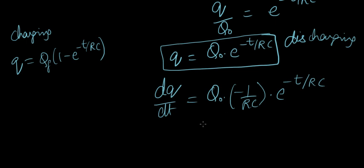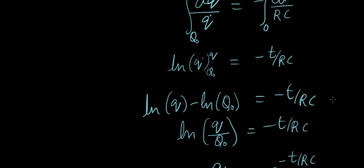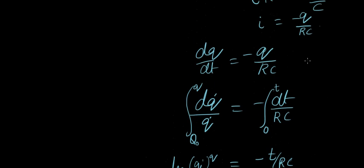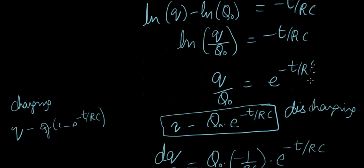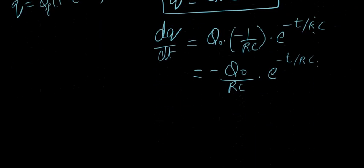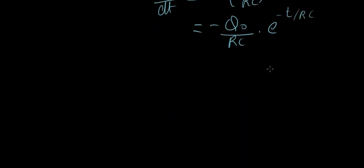So here, you have a negative Q0 over RC times E power minus T over RC. If you go back to the top here, small I equaled negative small Q over RC. Essentially, this is the same. The initial current.